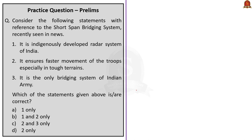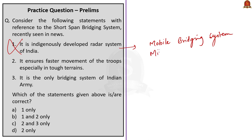The next question is based on the Short Span Bridging System. Statement 1 — it is an indigenously developed radar system of India — is incorrect, as it is a mobile bridging system used to bridge gap obstacles like rivers and trenches. Statement 2 — it ensures faster movement of troops, especially in tough terrains — is correct, as this is one of its major functions. Statement 3 — it is the only bridging system of the Indian Army — is incorrect, as DRDO has already developed other systems such as the 46m modular bridge and the 75m Sarvatra multi-span bridging system. The correct answer is option D: two only.